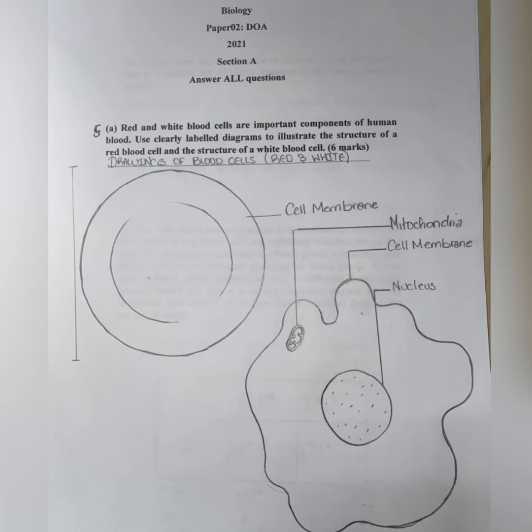Importantly, the white blood cells, they have a nucleus. So ensure you represent that as well as other organelles, for example, the mitochondria. And apart from annotating your diagrams to secure the full six marks, you want to ensure that you have a title as well as your scale bars.